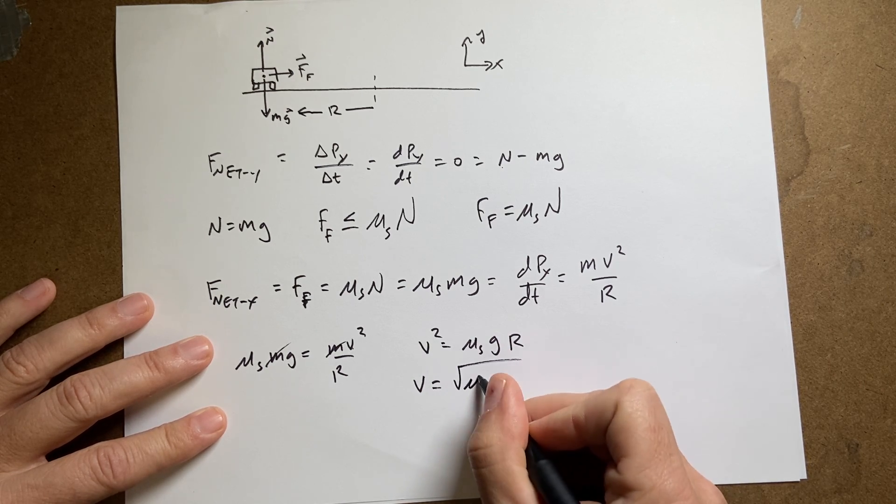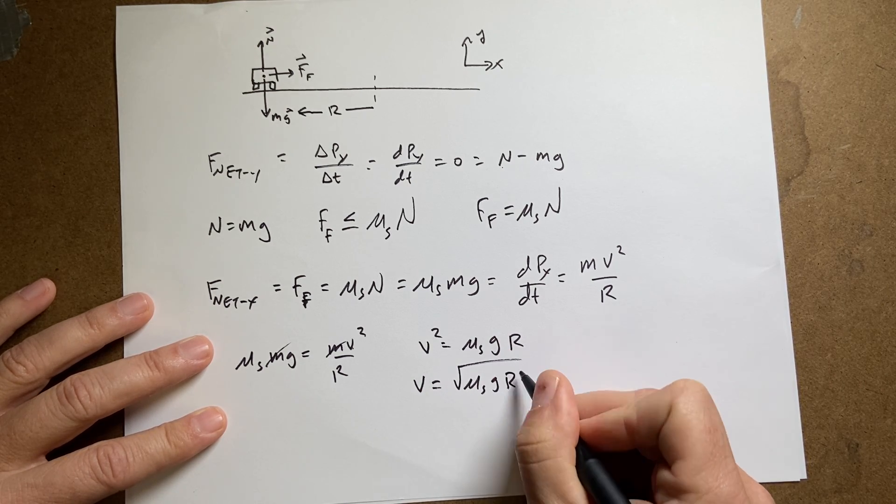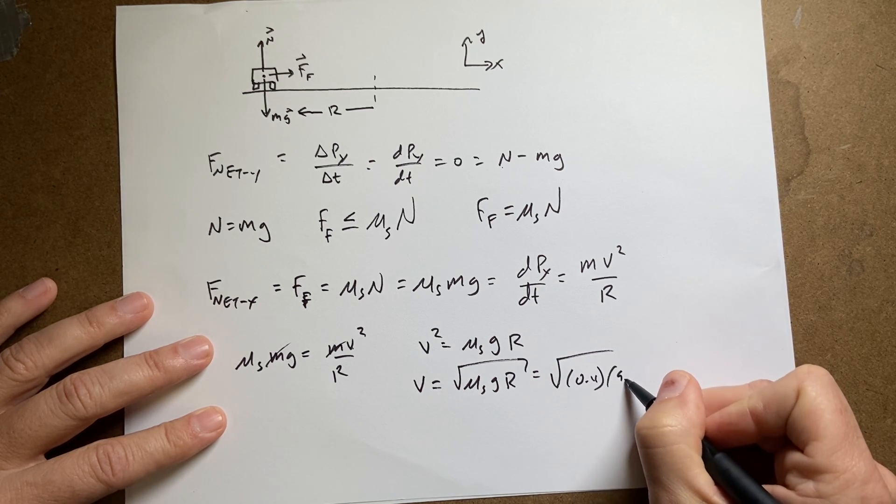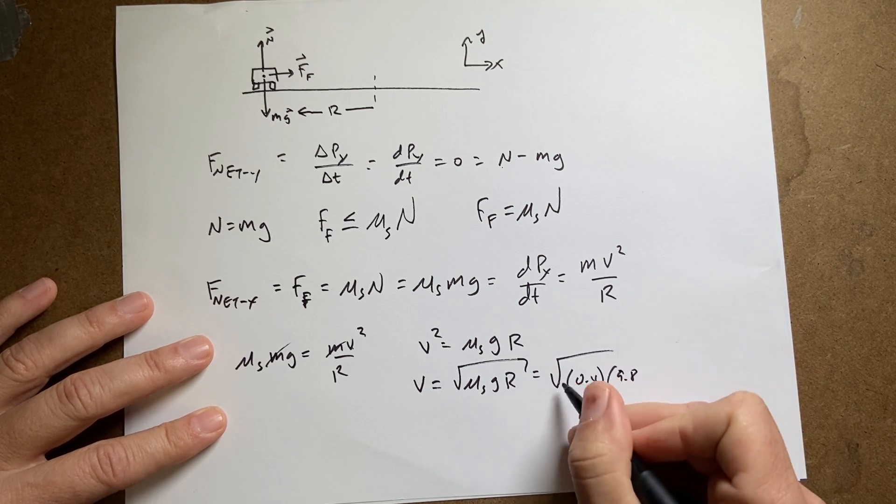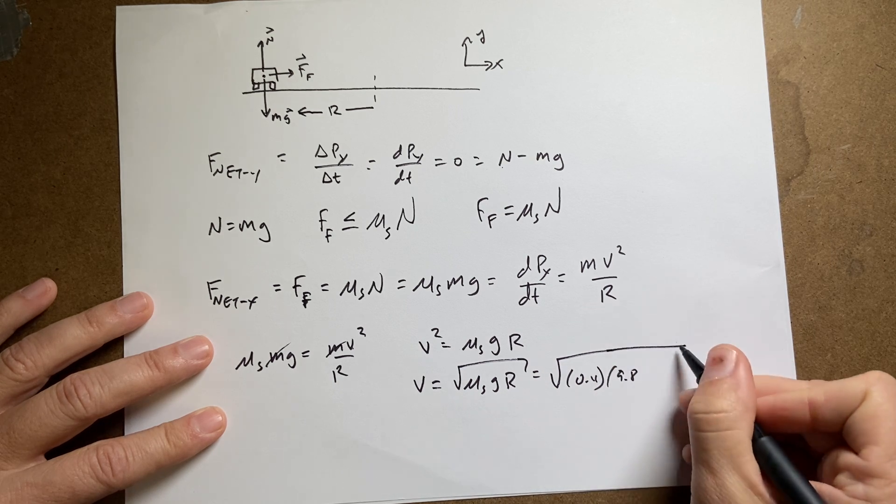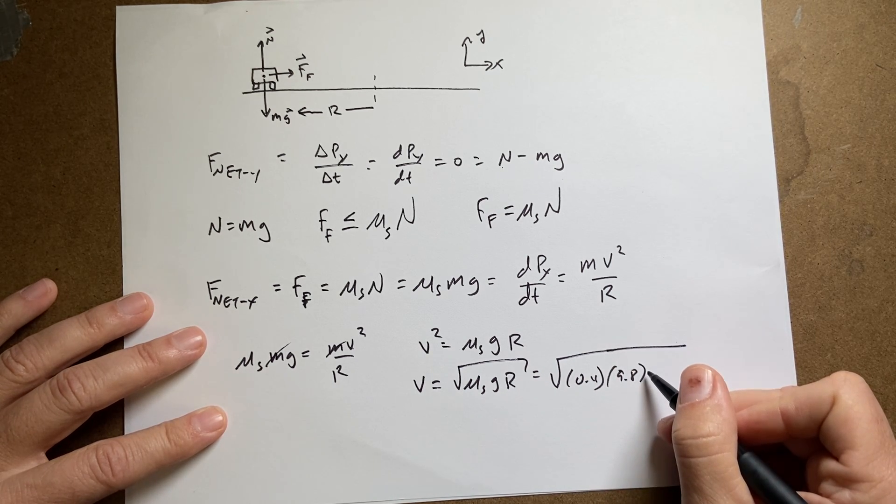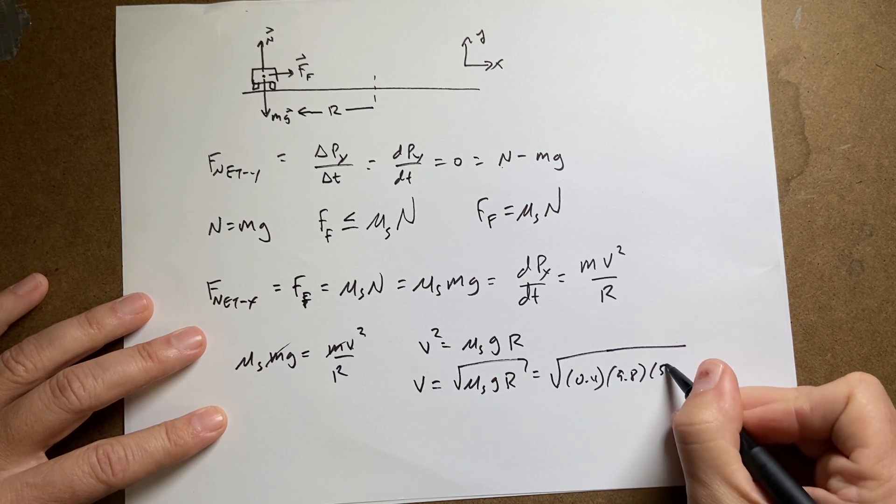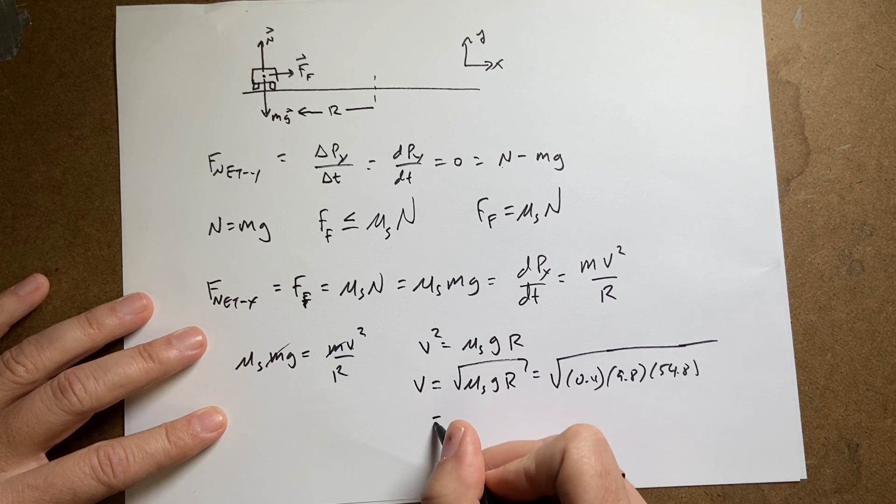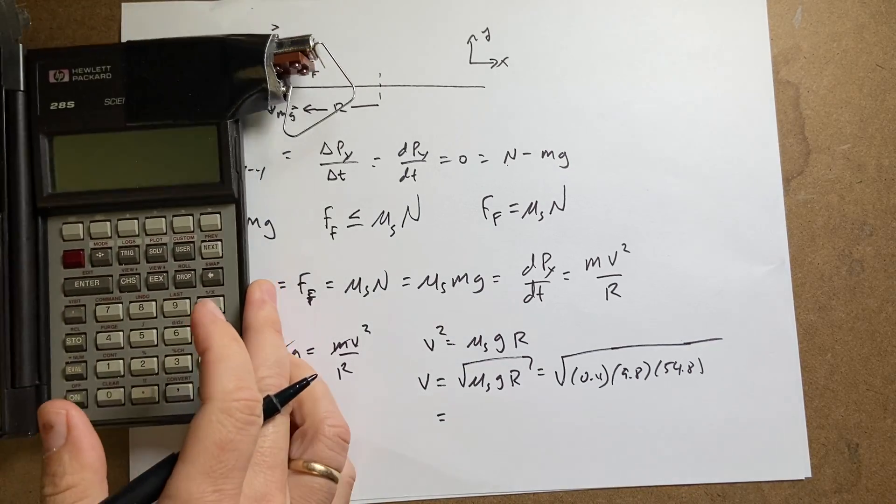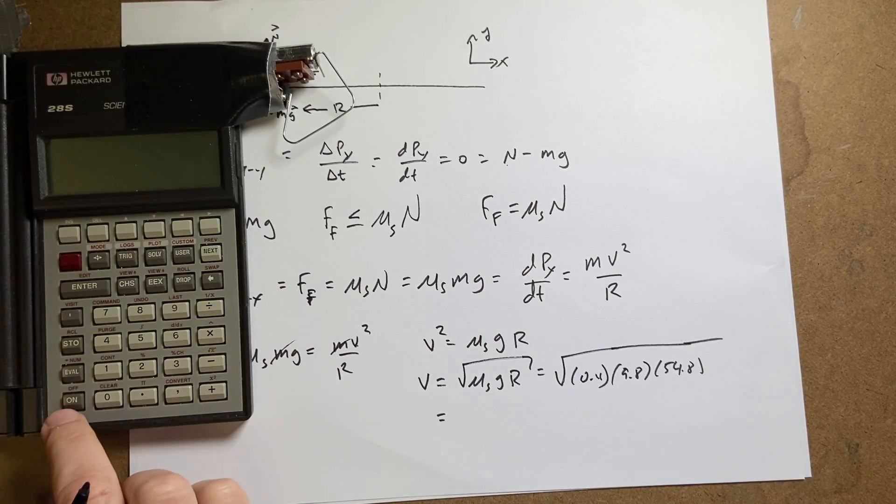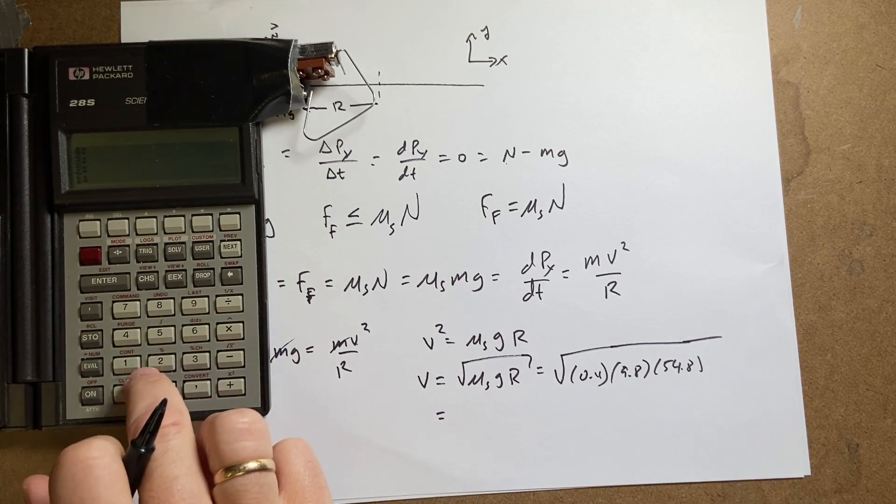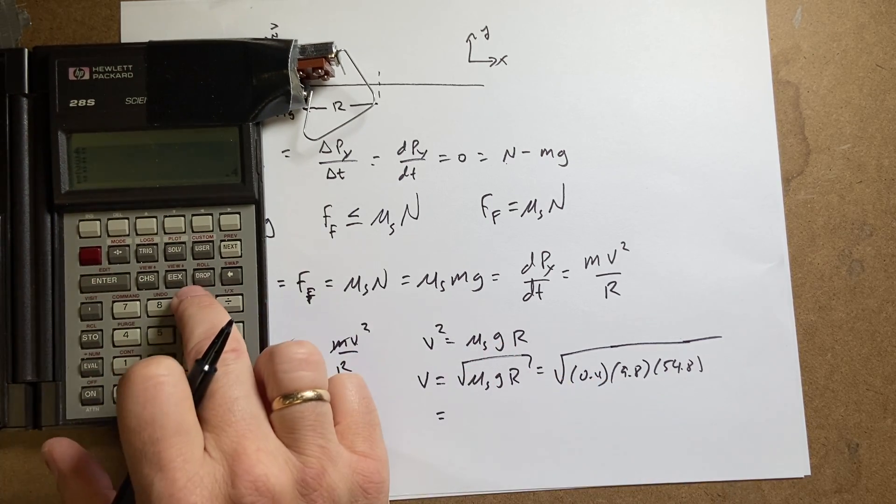So v is the square root of mu s g r. So put in our values. Square root of 0.4, 9.8. That's the magnitude of the gravitational field. And then r was 54.8. And I left off the units. But I'm going to put these in. Okay. So I'm going to just put in 0.4, enter, 9.8.